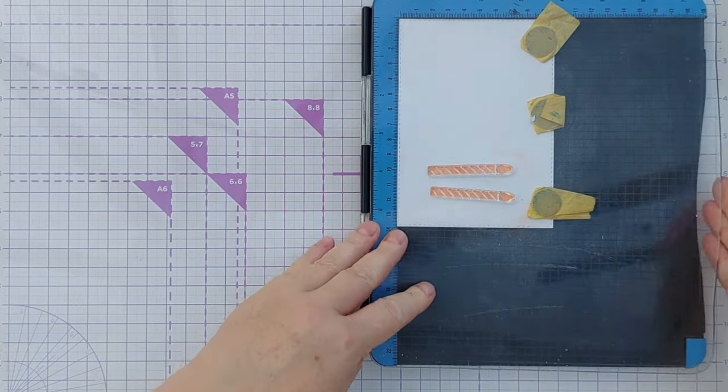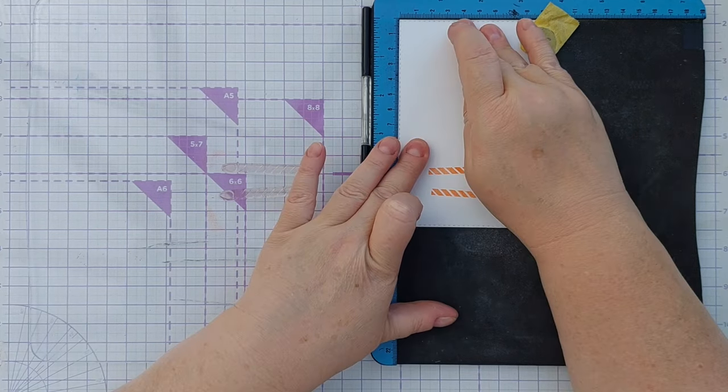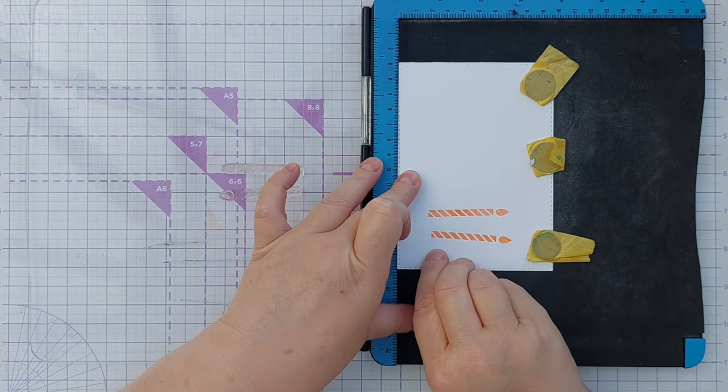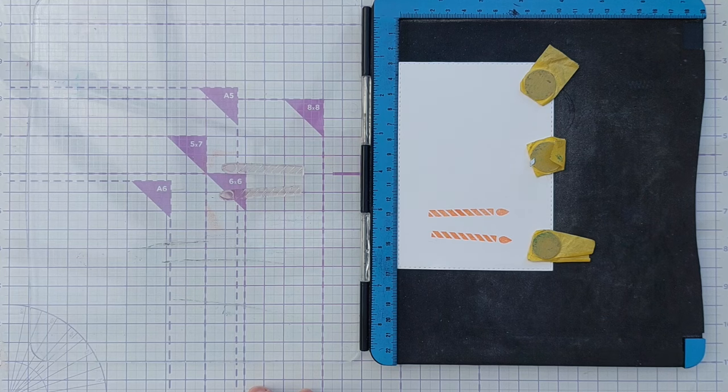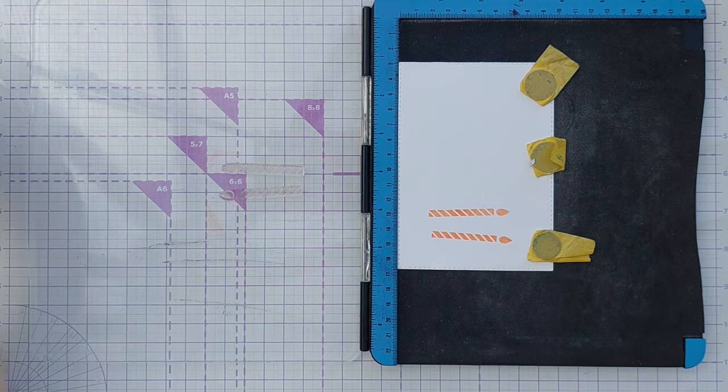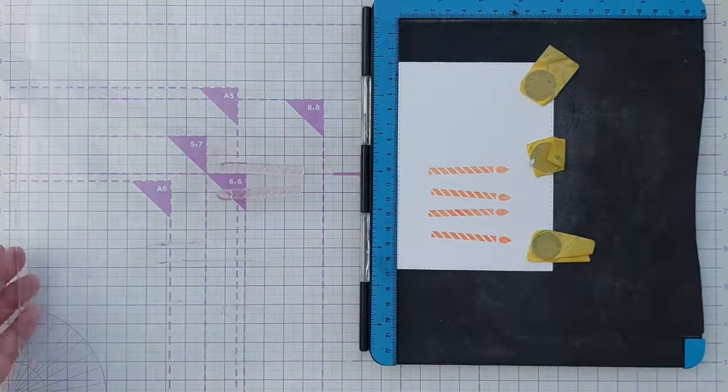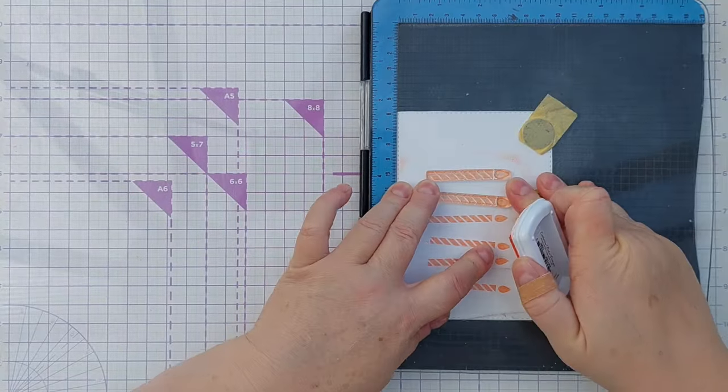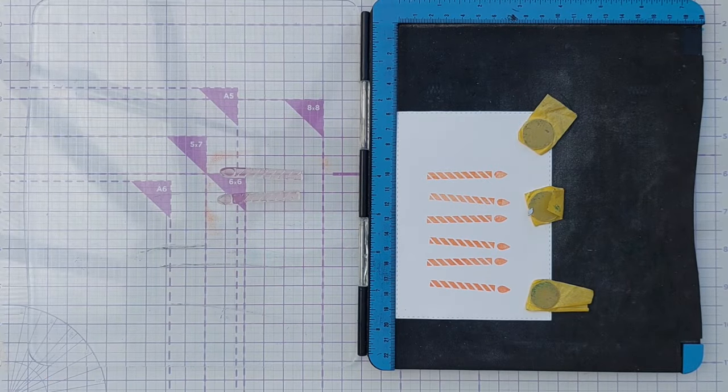And stamp some images. So that was Bellini and I'm going to move this down a little bit. Now maybe, let's have a look, three centimeters, yeah I think that'll do. I think we'll do Bellini again, we'll do a row of Bellini.